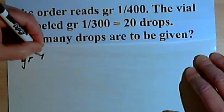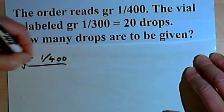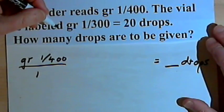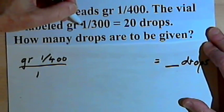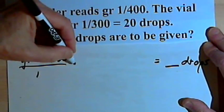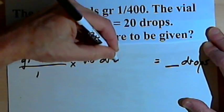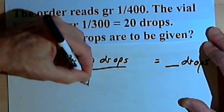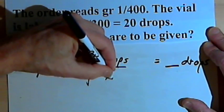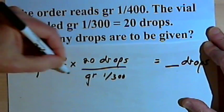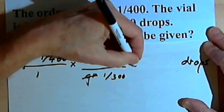So let's start with the order. That's 1-400th of a grain, and I'll put that over 1. At the right side of the equation, I want to remind myself that I'm dealing with drops. And then we know that 1-300th of a grain equals 20 drops. So I'll take my first fraction and multiply it by 20 drops over 1-300th of a grain. So the grains are going to cancel again,